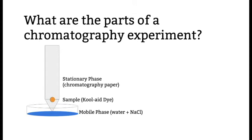What are the parts of a chromatography experiment? In general, a chromatography experiment will contain three components. The stationary phase, which is paper in this experiment. The mobile phase is in general a liquid that travels across the stationary phase during the course of the experiment. And perhaps most importantly, the sample of interest, which will be carried by the mobile phase and interact with the stationary phase during the course of the experiment.